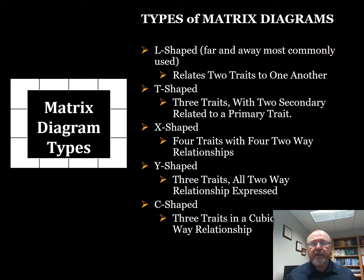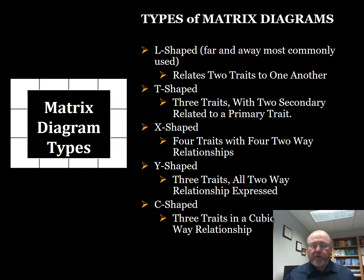An X-shaped matrix looks at four different factors that may or may not have the same number of elements. We can find four two-way relationships, but there are two two-way relationships we won't be able to look at directly. A Y-shaped matrix looks at three factors and enables you to look at the relationships A with B, B with C, and A with C — all of those relationships. There's also a C or cubic-shaped one that allows you to look at the three-way relationship A with B with C simultaneously. I have never seen a C-shaped or Y-shaped one used in practice.